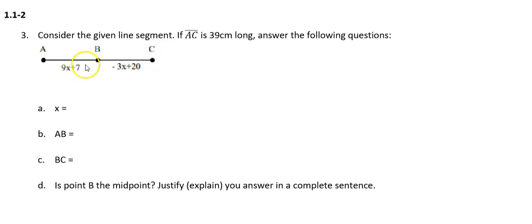What is missing from this problem is any information about the left and right side of this segment being equal to each other. I have no tick marks to tell me the left and right sides are the same length, and there's no statement in the directions saying segment AB and segment BC are congruent or have equal measure. So I cannot create an equation that sets these two formulas equal to each other — that's not possible.